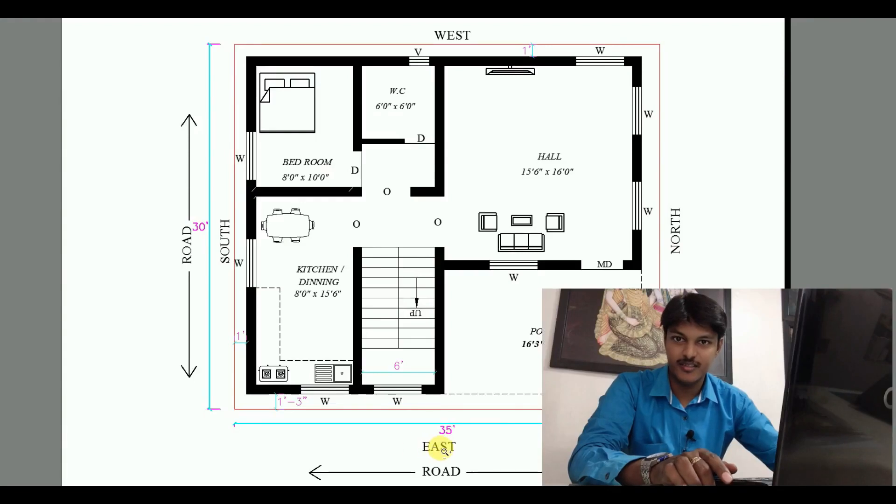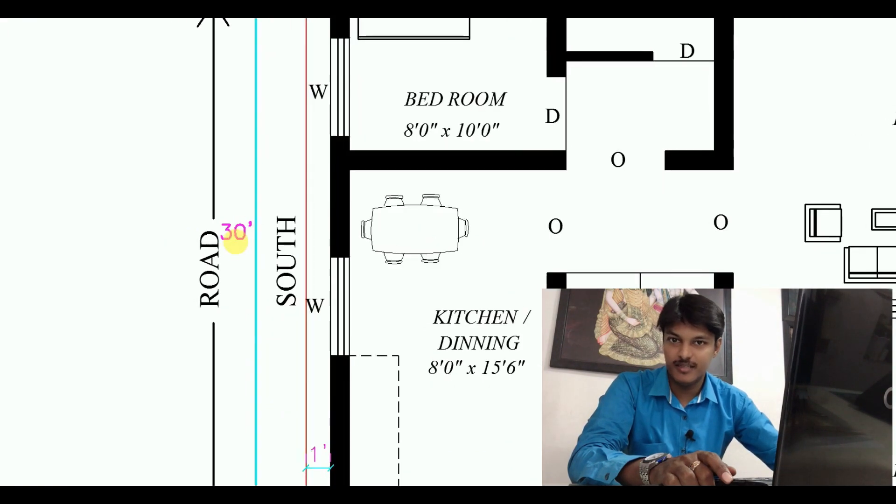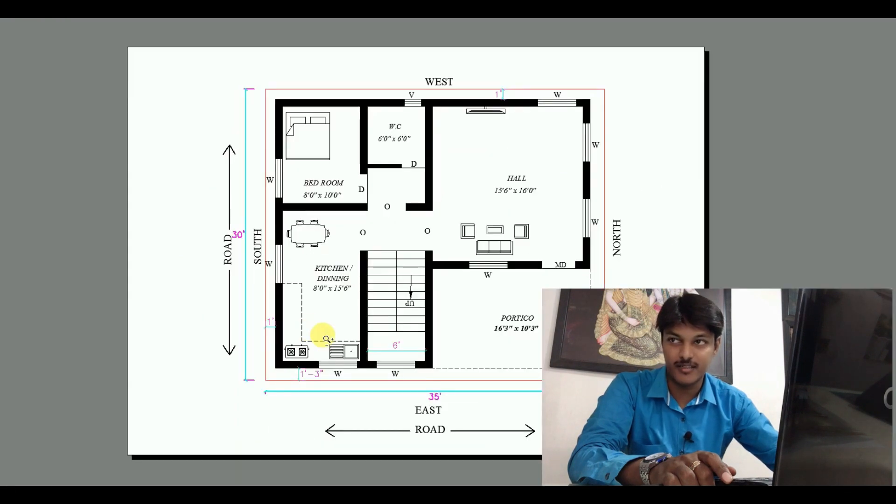This is the East Facing. The East Facing side is 35 feet. This is the road. This is the South Facing. The South Facing side is 30 feet. This is the road. This is the corner side.